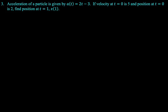All right, new problem. The acceleration of a particle is given by a(t) = 2t - 3. Velocity at t = 0 is 5. Position at t = 0 is 2. Find the position at t = 1, which is called x(1). So we're going backwards, right? We're going to go from acceleration to velocity.